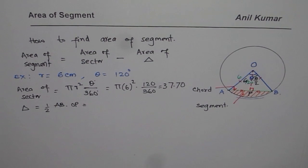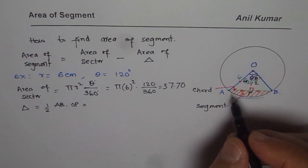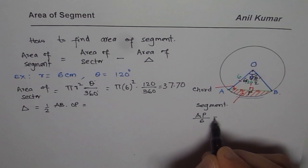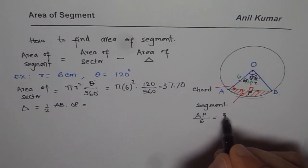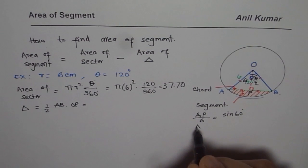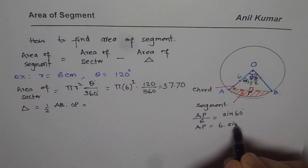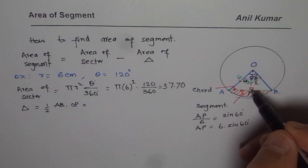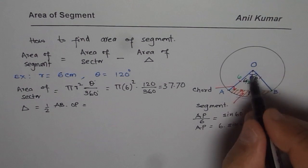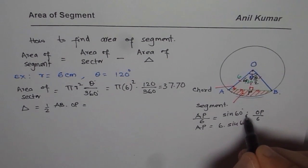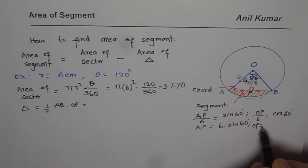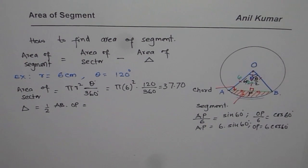So in that case, we know AP over hypotenuse 6 is equals to sine of 60 degrees. Therefore, AP is equals to 6 times sine of 60 degrees in this case. As far as OP is concerned, we can write OP over 6 is equal to cos of 60 degrees in this case. So therefore, OP equals to 6 times cos of 60 degrees.